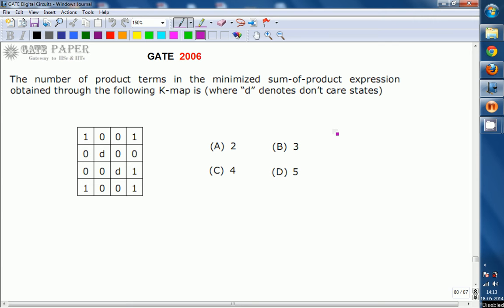The number of product terms in the minimized sum-of-product expression obtained through the following K-map is... For the given K-map, how many number of terms you are going to get in the SOP expression.